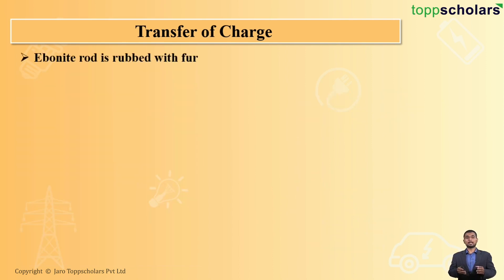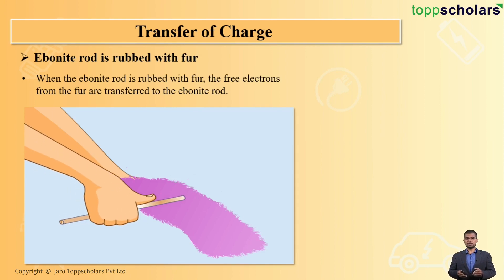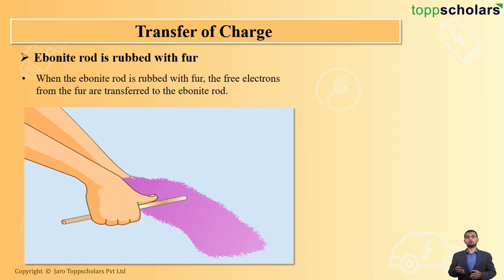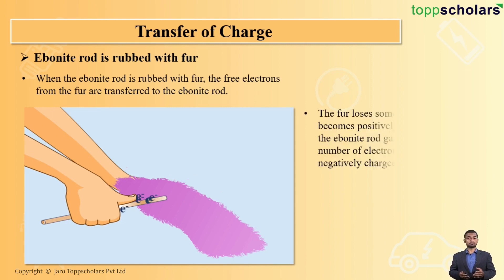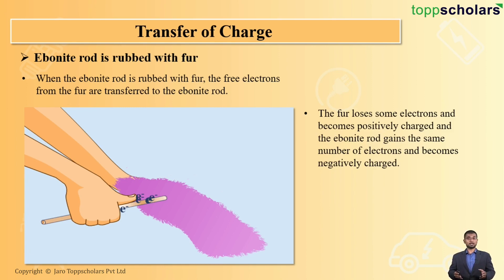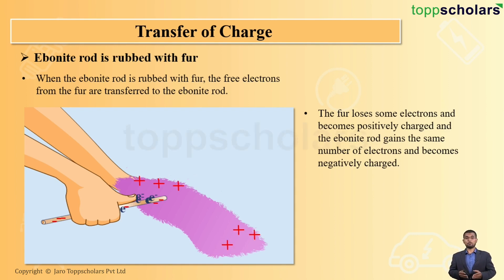The next example is an ebonite rod rubbed with fur. When this happens, the electrons will move from the fur to the ebonite rod. The rod will be negatively charged and the fur will become positively charged. The fur loses some electrons and becomes positively charged, and the ebonite rod gains the same number of electrons and becomes negatively charged, which can easily be observed here. The number of positive charges is 6, and similarly the number of negative charges is also 6.